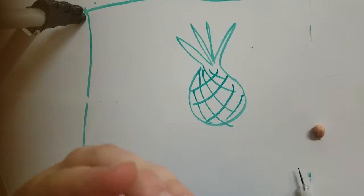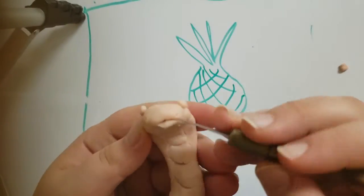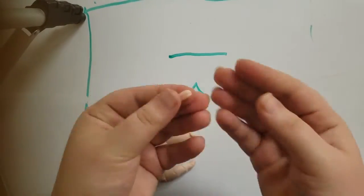Use your pick and poke two holes at the end of the snout for a nose. Finally, use your knife and cut a small incision at the very end of the snout for a mouth. Make it wide enough that you can open it and put in the tongue.